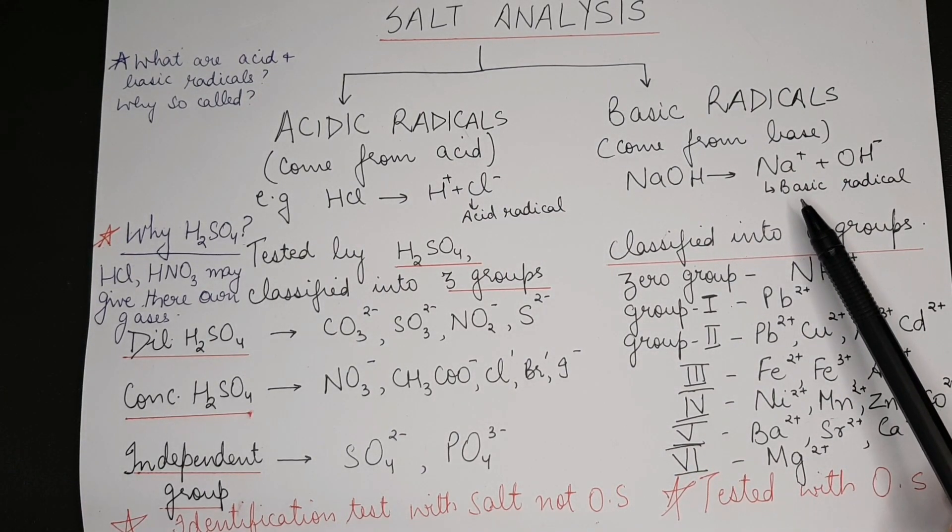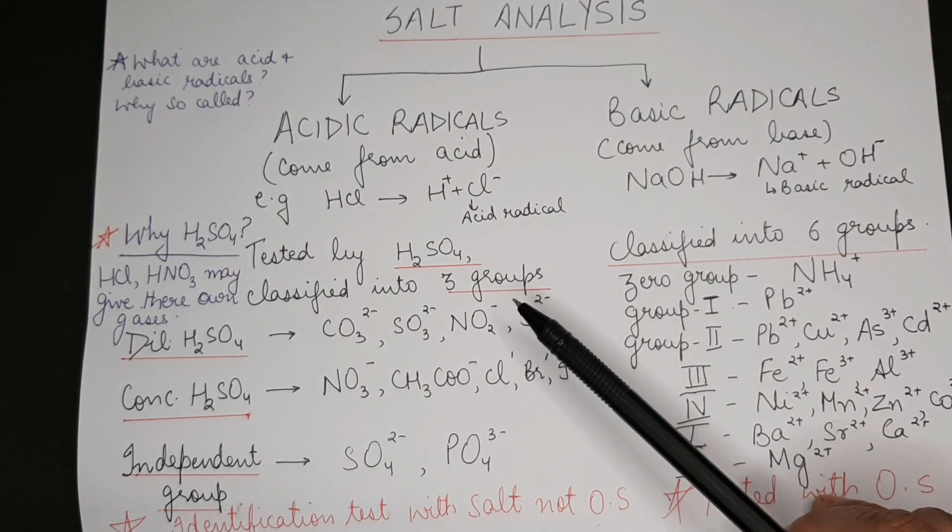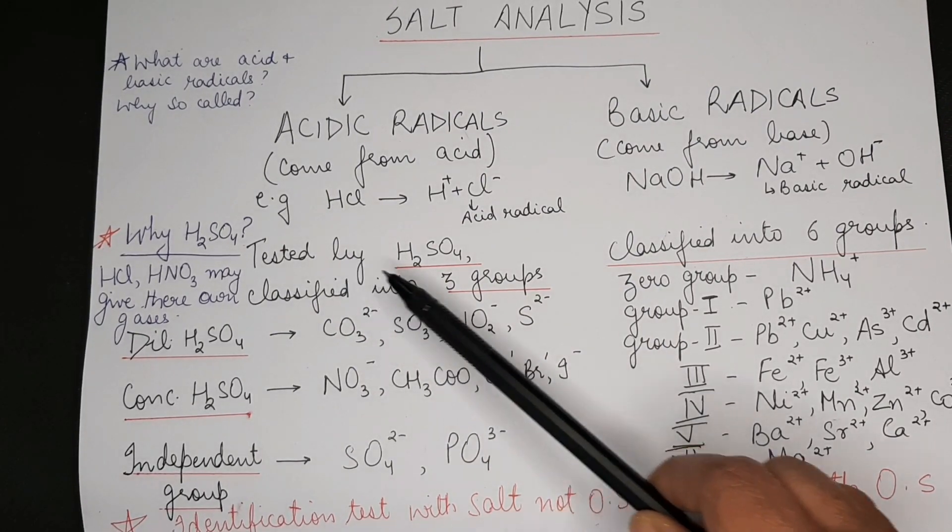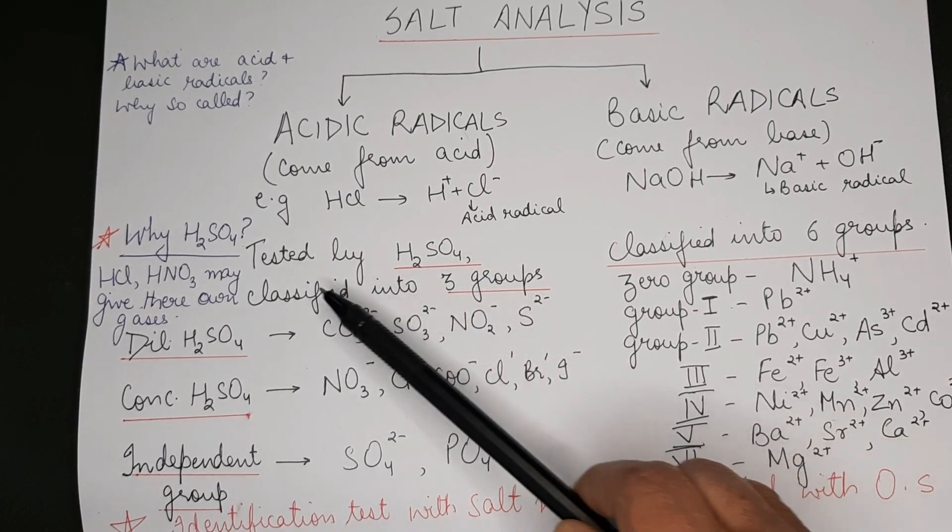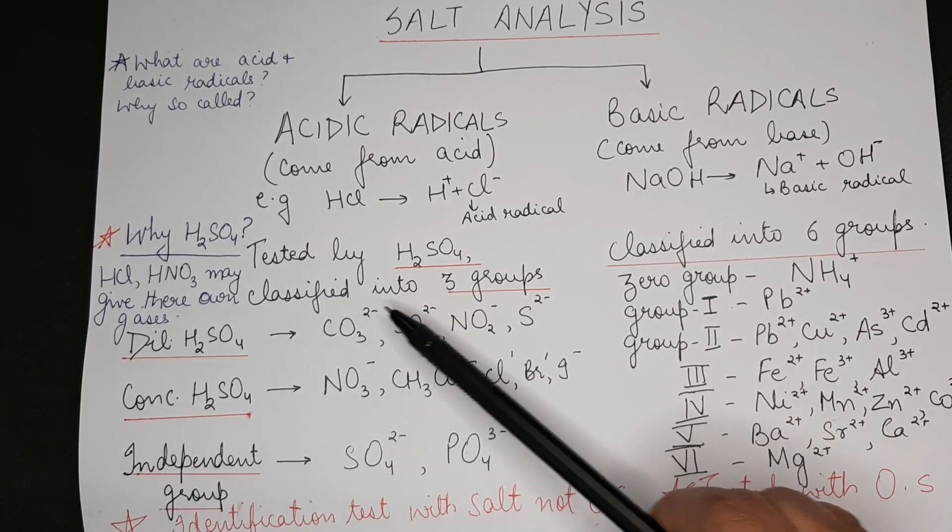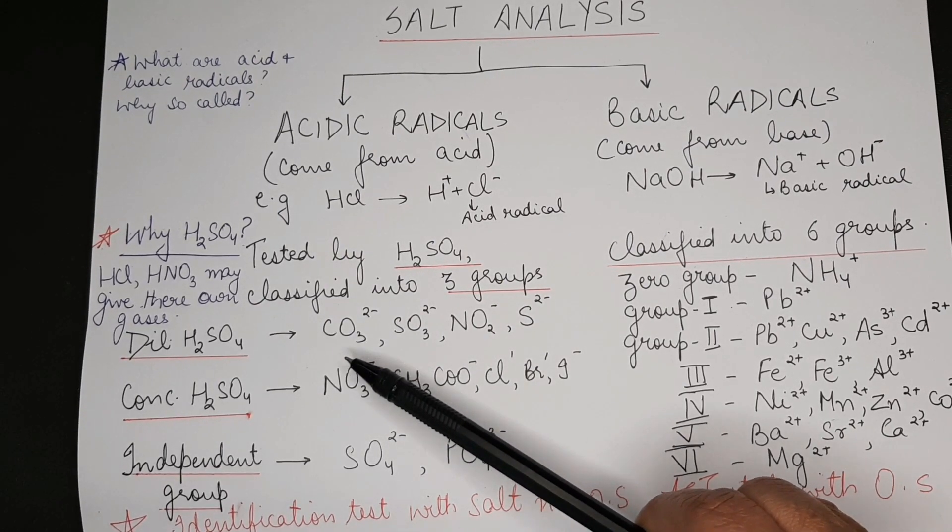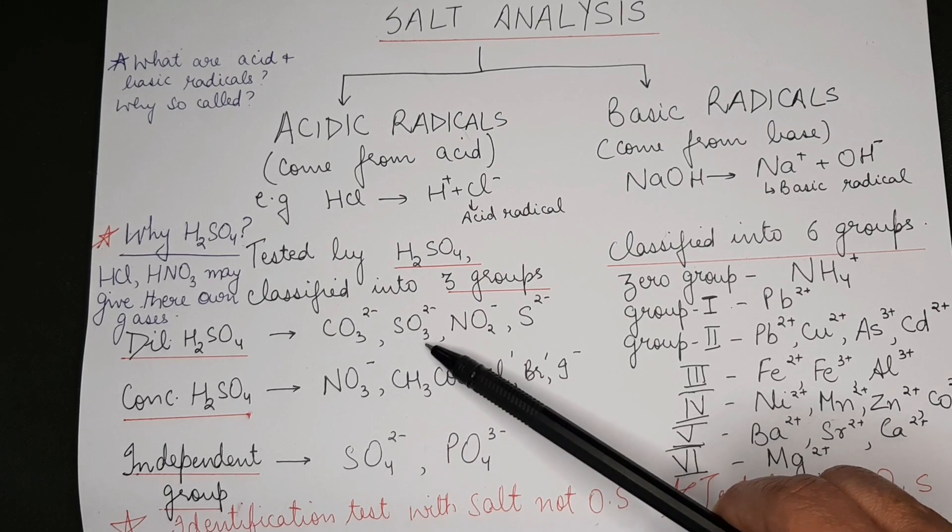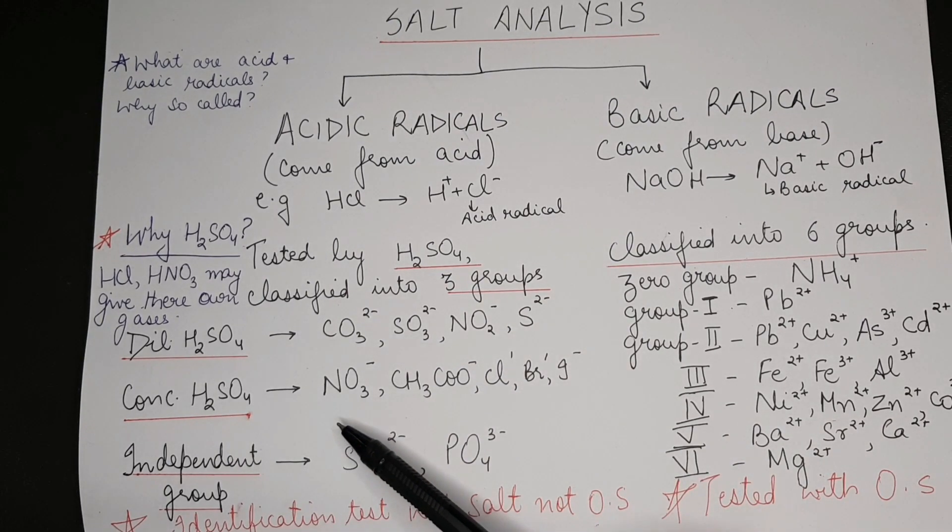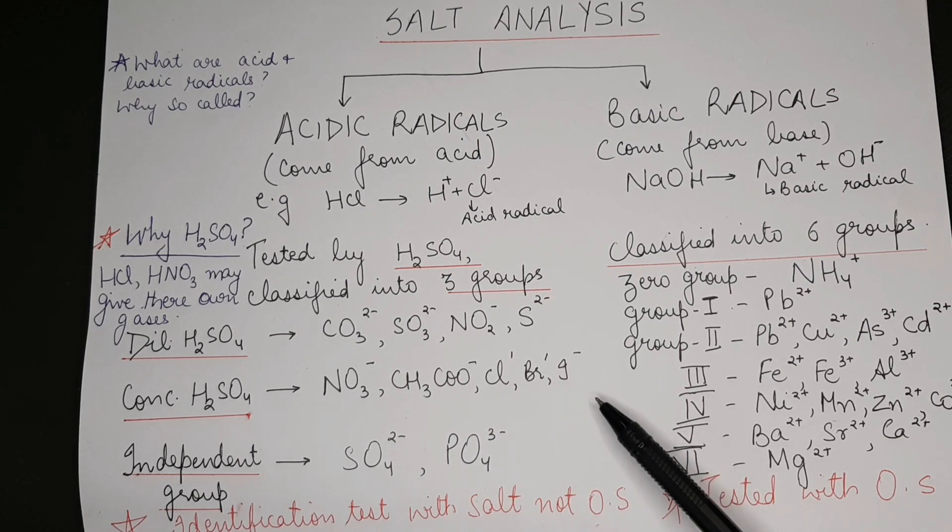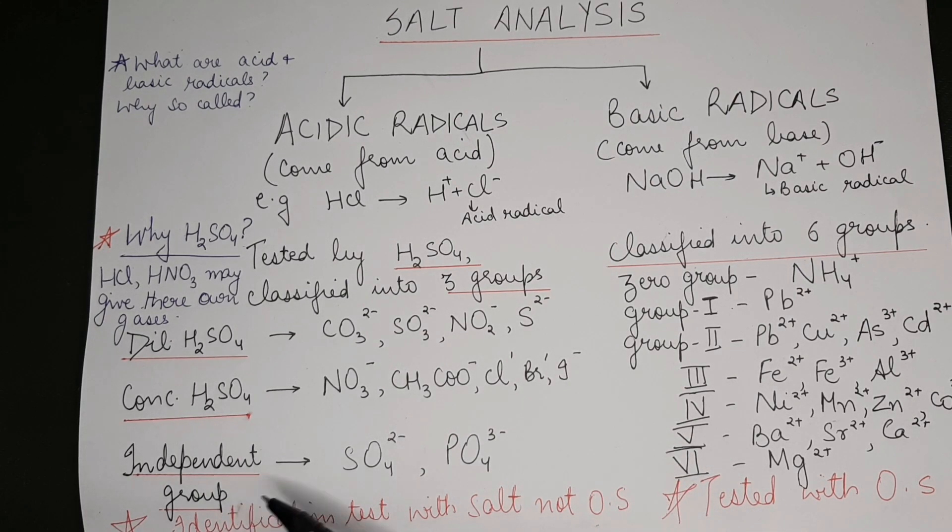Testing is done by sulfuric acid. Based on this, all the radicals are divided into three groups. The dilute sulfuric acid group: carbonate, sulfite, nitrite, and sulfide. Concentrated sulfuric acid group: nitrate, acetate, fluoride, bromide, iodide. I've just written the common ones which are generally discussed in schools. Independent group: sulfate and phosphate.